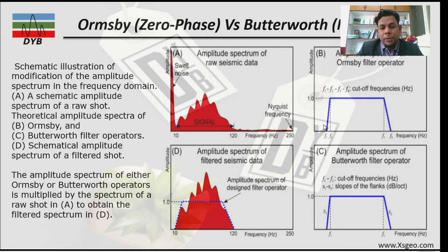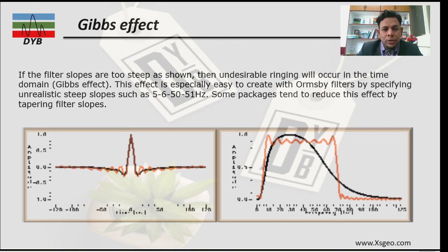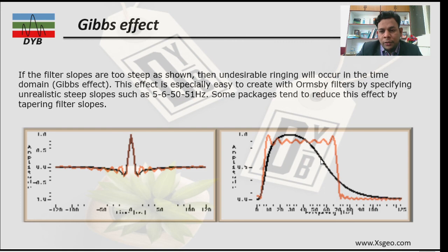A common question is why we define frequencies over a range such as 5 to 10 Hz rather than 5 to 6 Hz. If we define a very steep slope, we get the ringing effect. This is the Gibbs effect: the actual seismic is shown in black, but when you define steep slopes, you get the Gibbs effect visible as the orange color, producing a lot of ringing artifacts in the data.